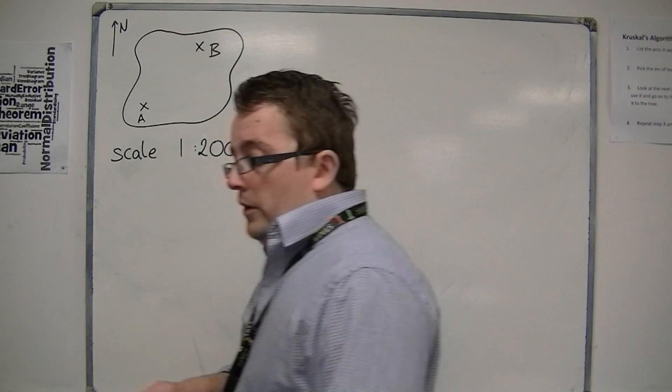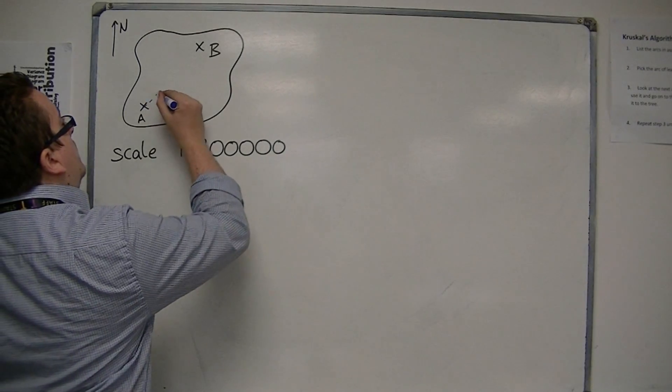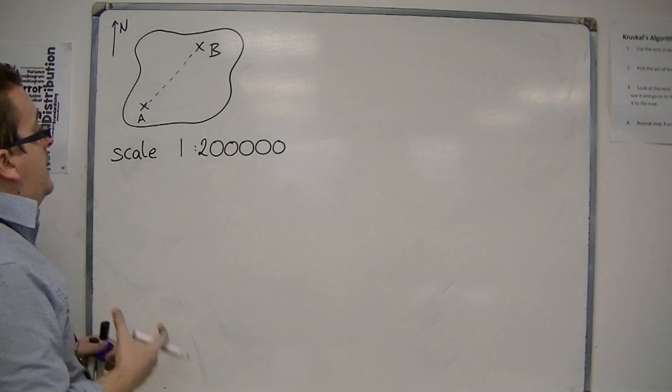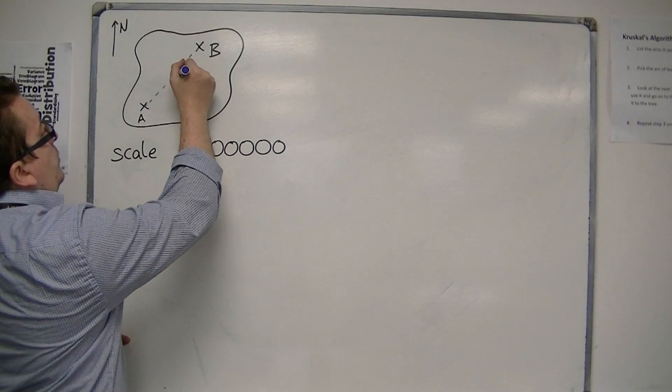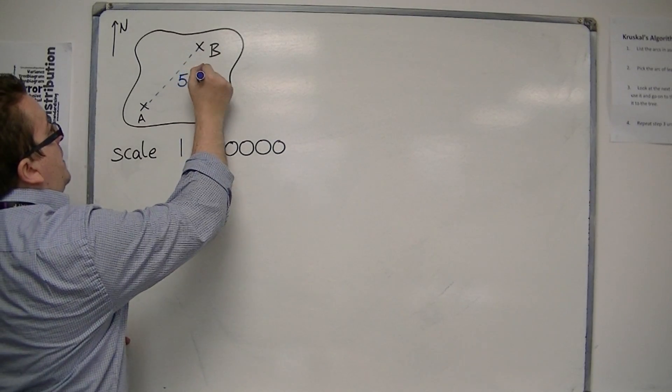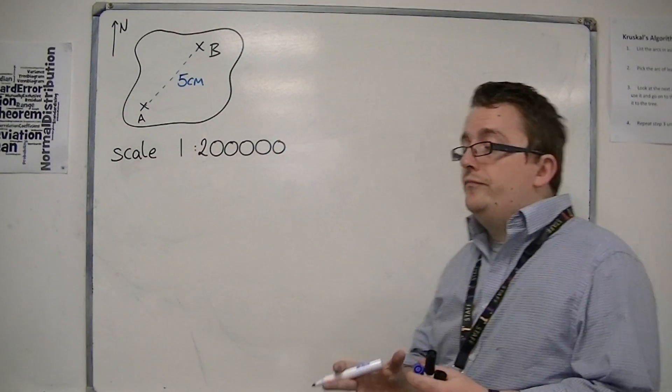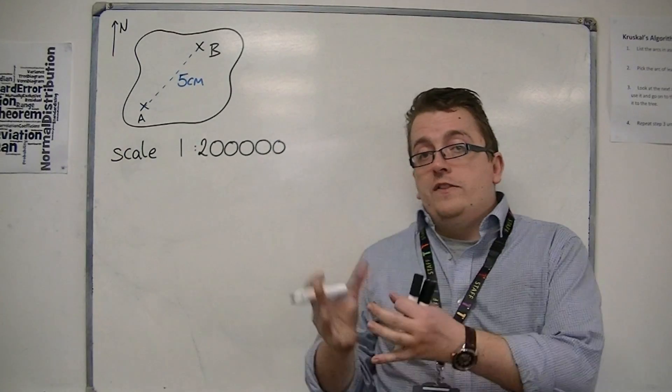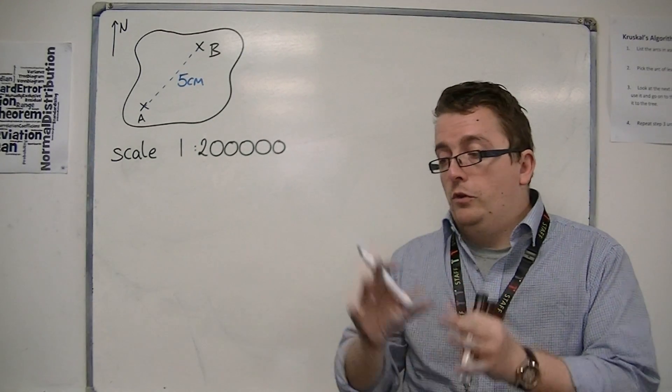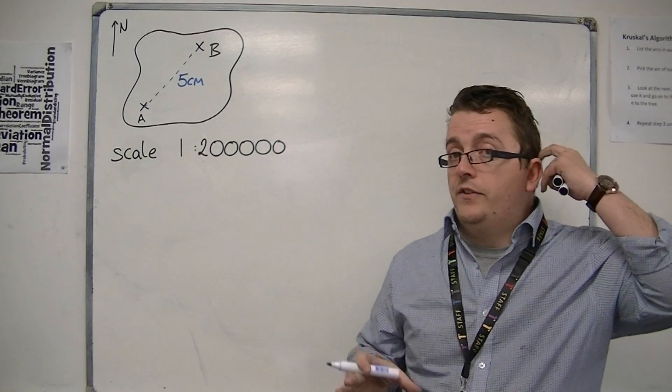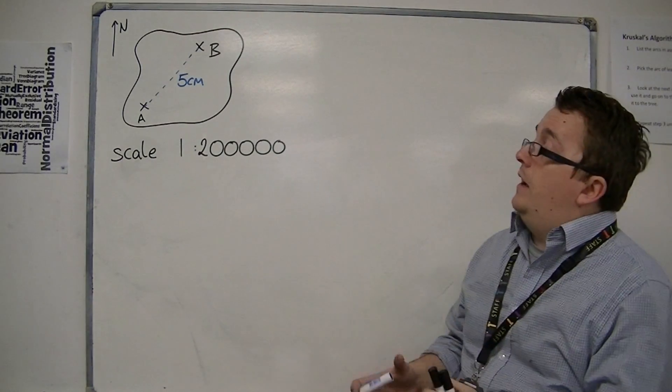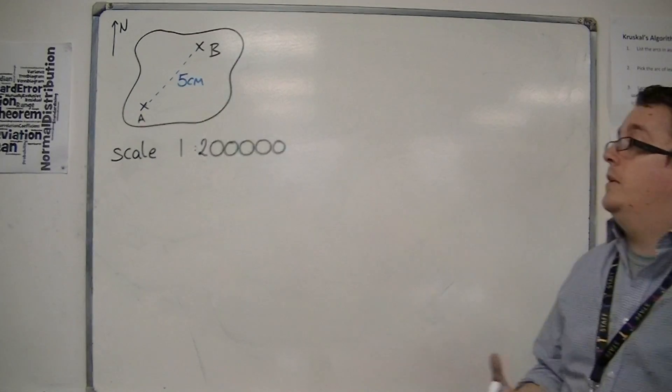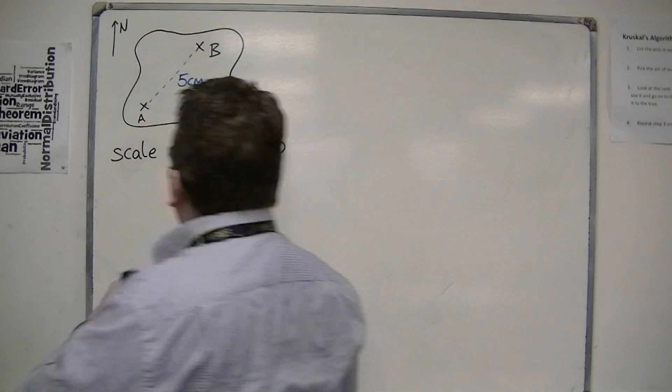So what I would do is I would measure how far apart these two towns were. And let's say these were five centimetres apart on the map. So this is a question that could be that you're either given a map and you're told to measure that distance and then convert it, or it could be that you're given the distance and you just need to convert it that way. So let's say it's five centimetres.